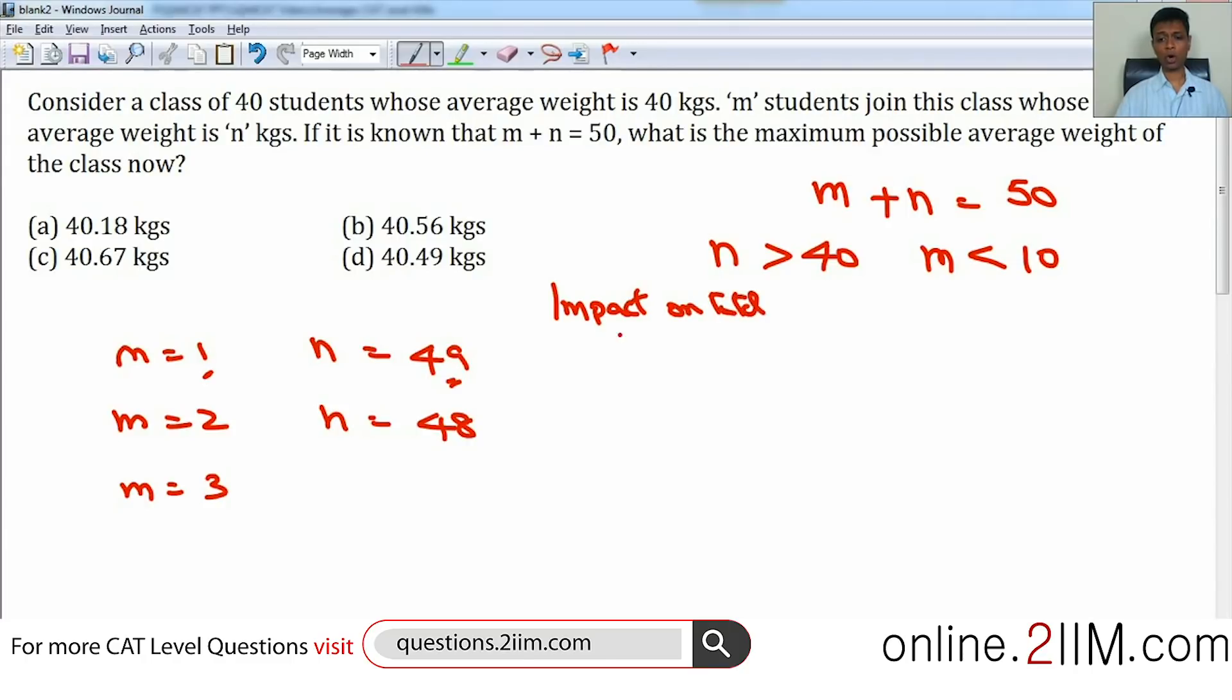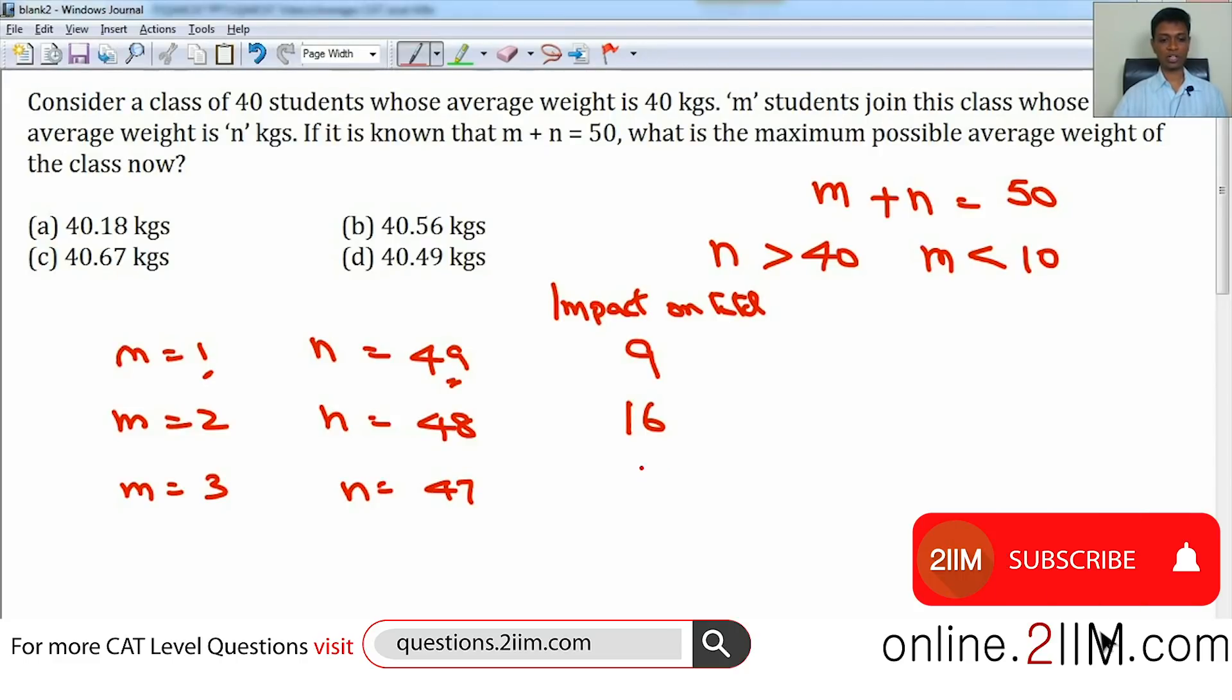In this case, total changes by 9—nine more kilograms brought in by one person. In this case, total changes by 16—eight more kilograms brought in by two people. Here, n would be 47—seven more kilograms on average, 7 times 3 equals 21. Then it would be 6 times 4 equals 24, 5 times 5 equals 25, and so on. This is the impact on the total.